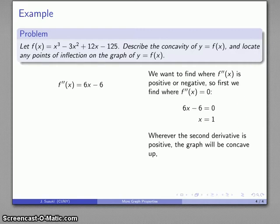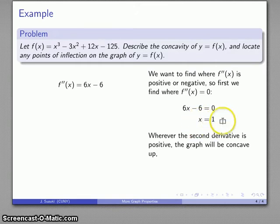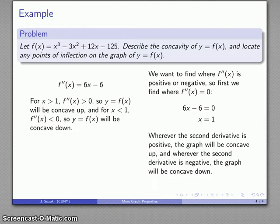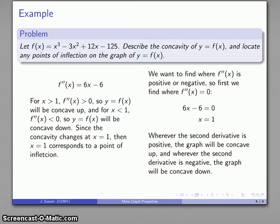x equals 1 is where the second derivative is 0, but that alone tells us nothing about its sign elsewhere. However, the sign can't change except by passing through this point. If x is greater than 1, the second derivative is positive, so the graph of y equals f of x is concave up. If x is less than 1, the second derivative is negative, so the graph is concave down. There is a change in concavity at x equals 1 — from concave down to concave up — so there is an inflection point at x equals 1.